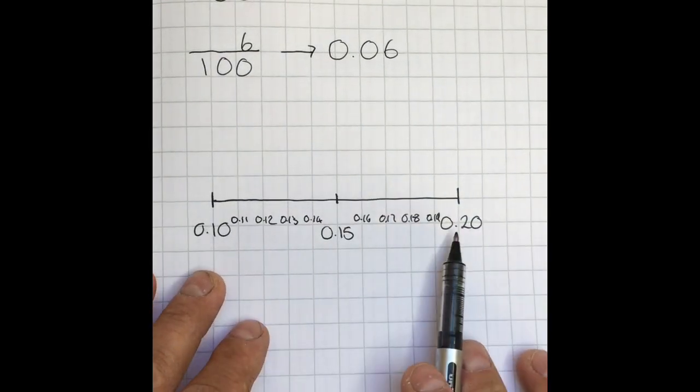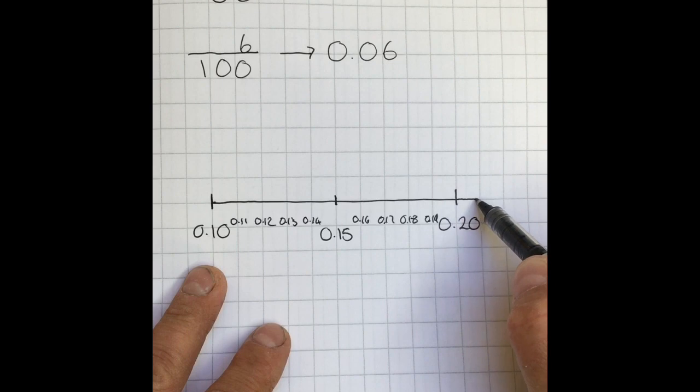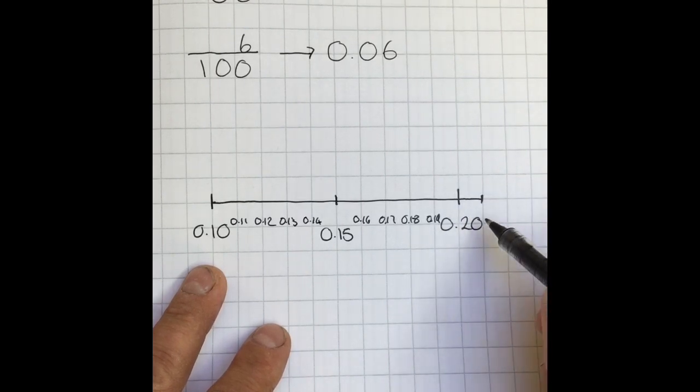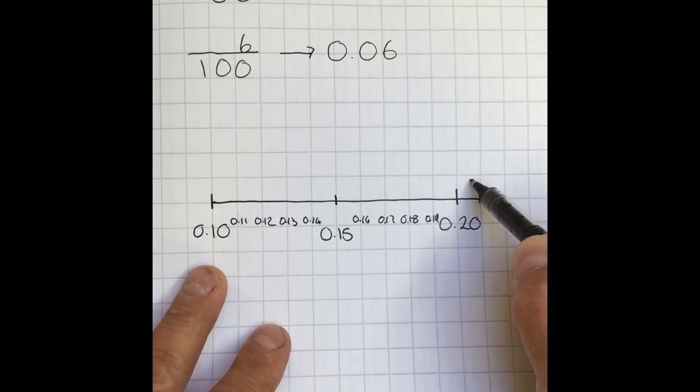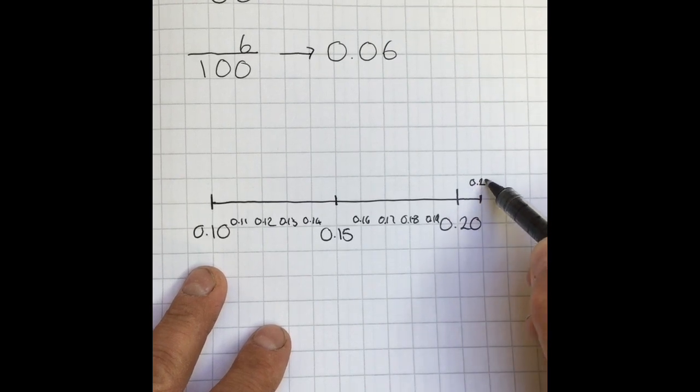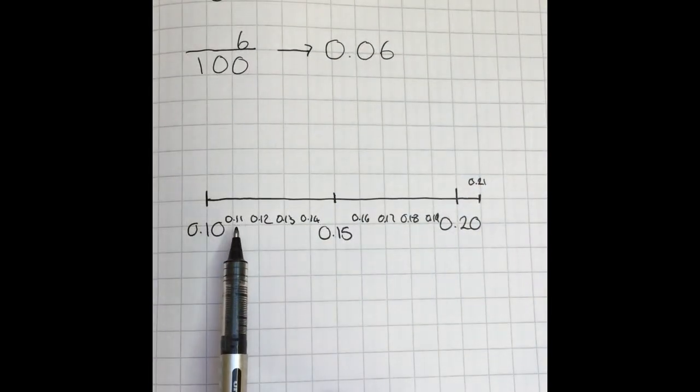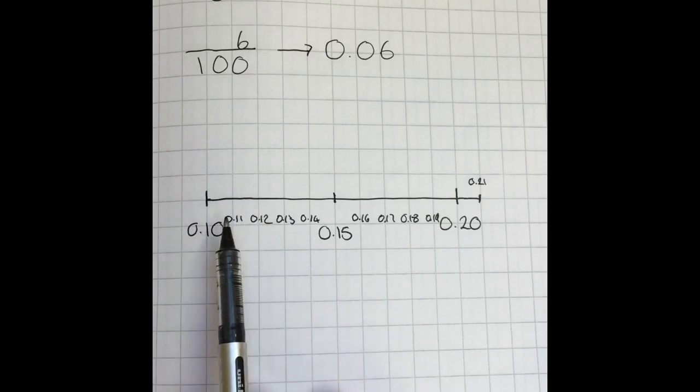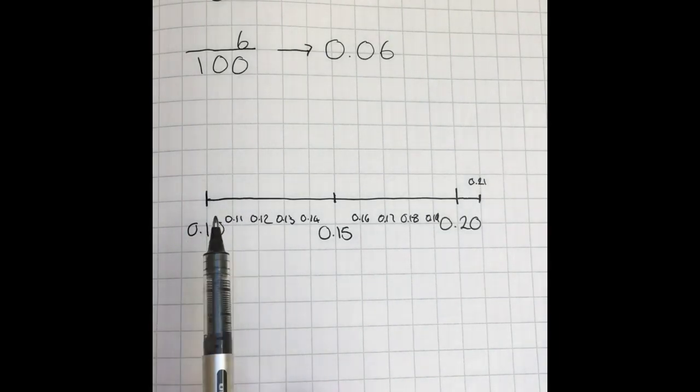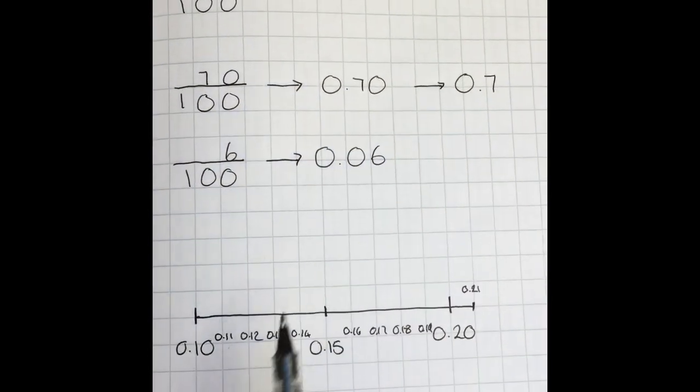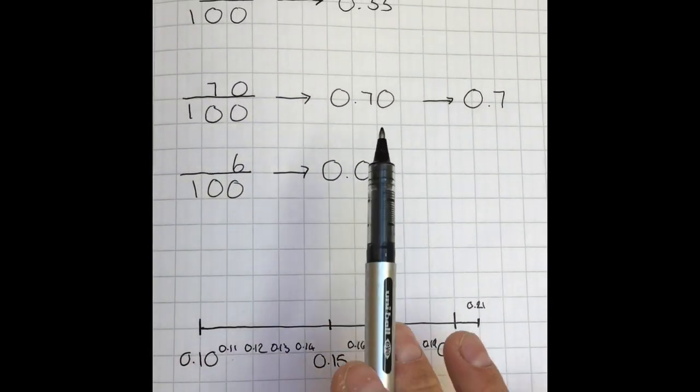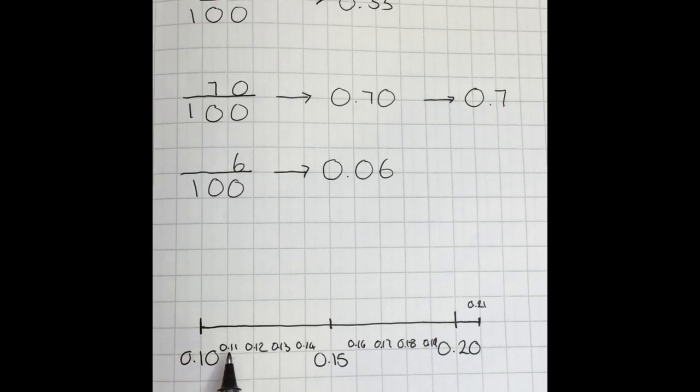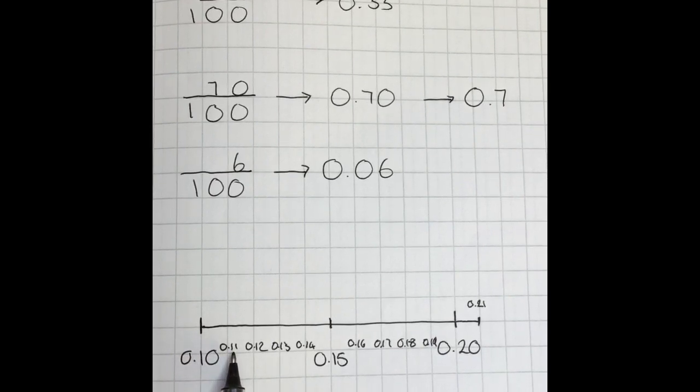If that is 0.2, what would the next interval on this number line be as we move forward? Hopefully you have answered 0.21. As you can see from my number line, each of these little intervals represent hundredths, just like they did on the hundred square. When reading the number line, you would read it just like you did previously: 0.11 or 0.11, 0.21 or 0.21.